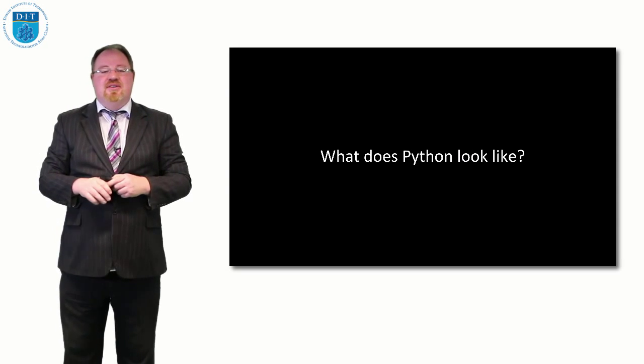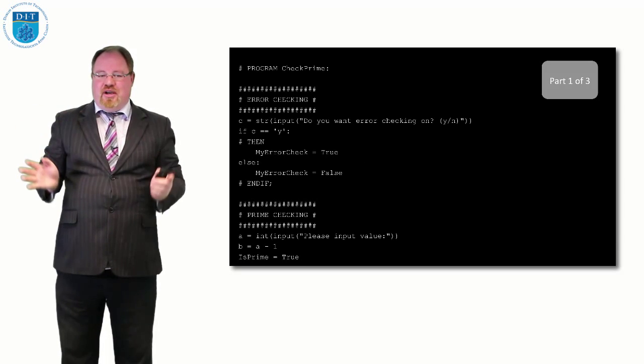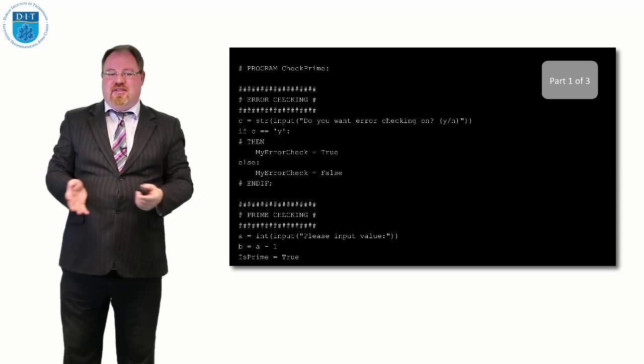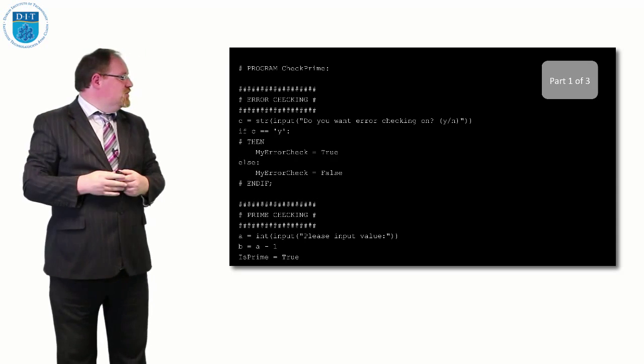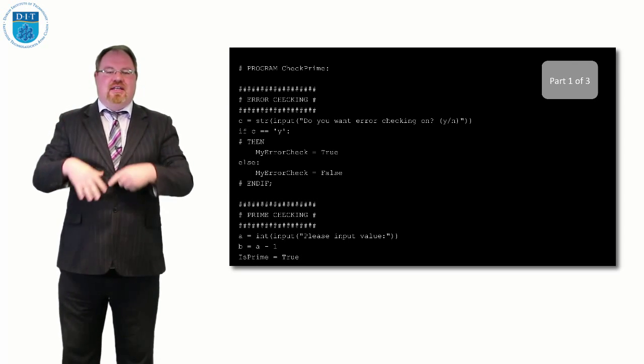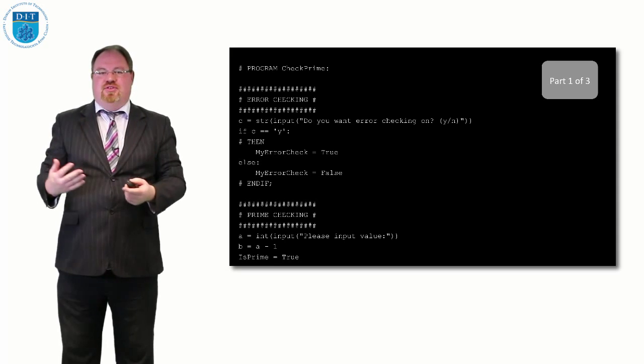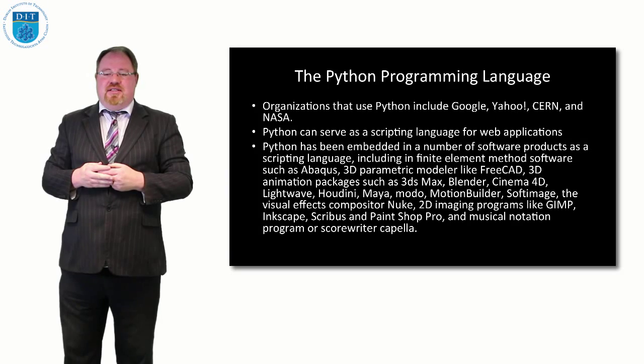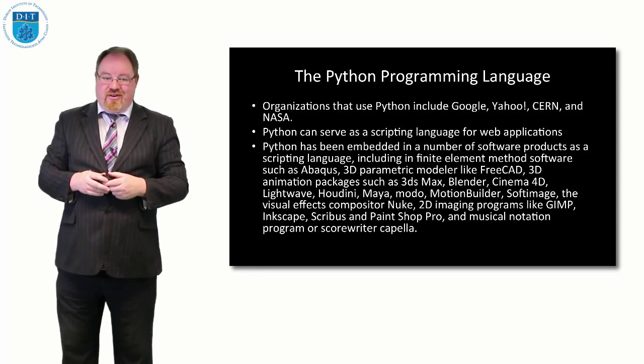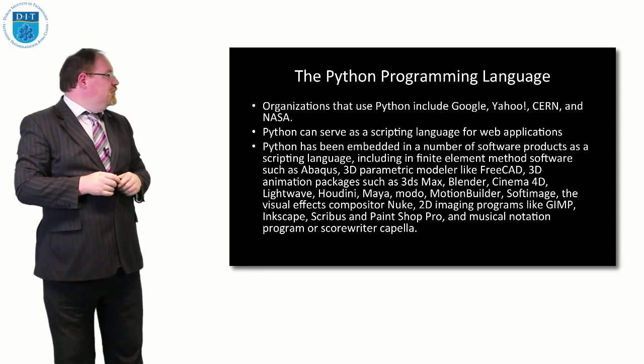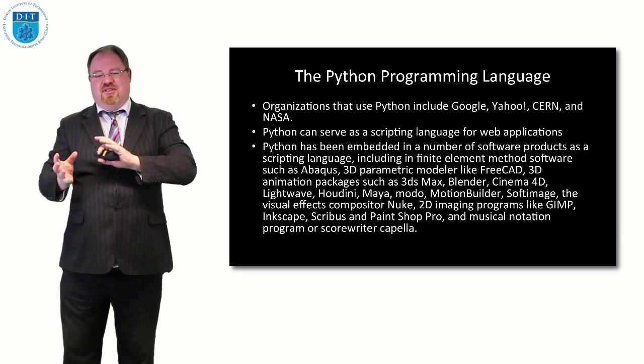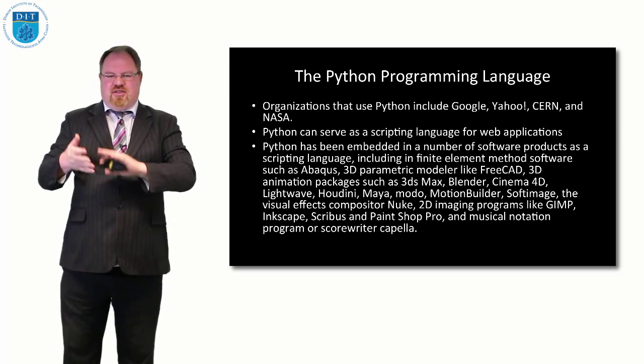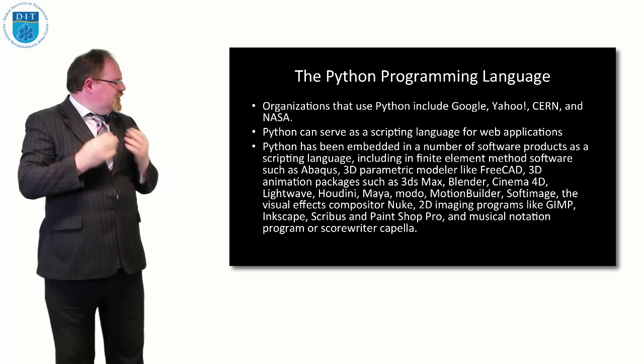Here's some Python code—don't worry about it, I just want you to see that it's English in appearance with words involved. Unlike some programming languages where it's more numeric, Python has English language in it. Organizations like Google, Yahoo, CERN, and NASA use Python. It can also be used to create web pages and write web applications.